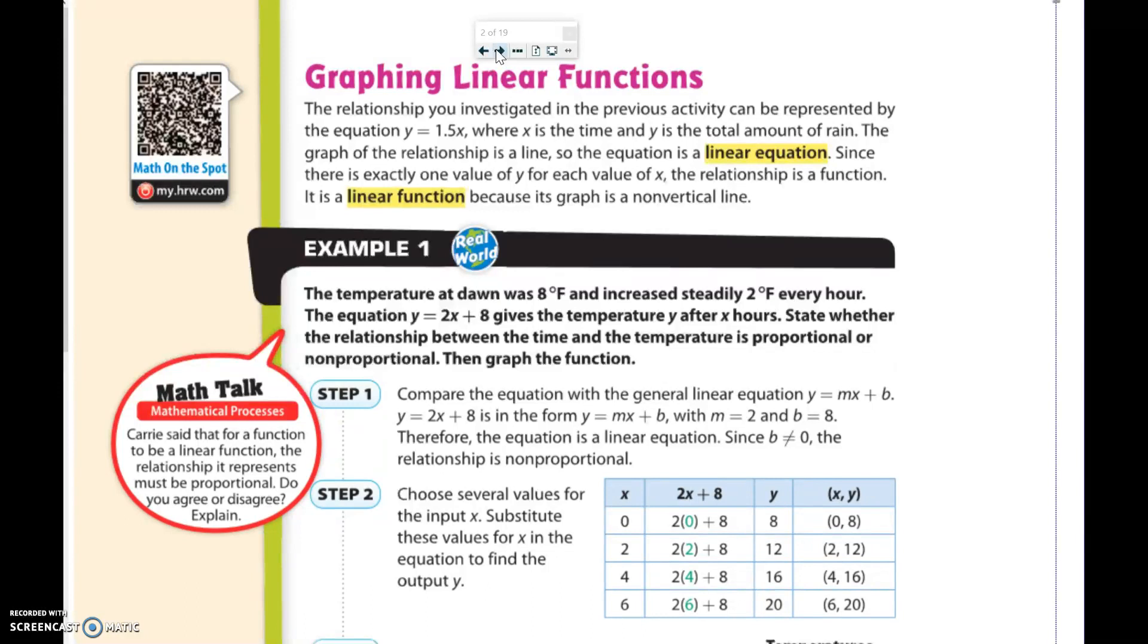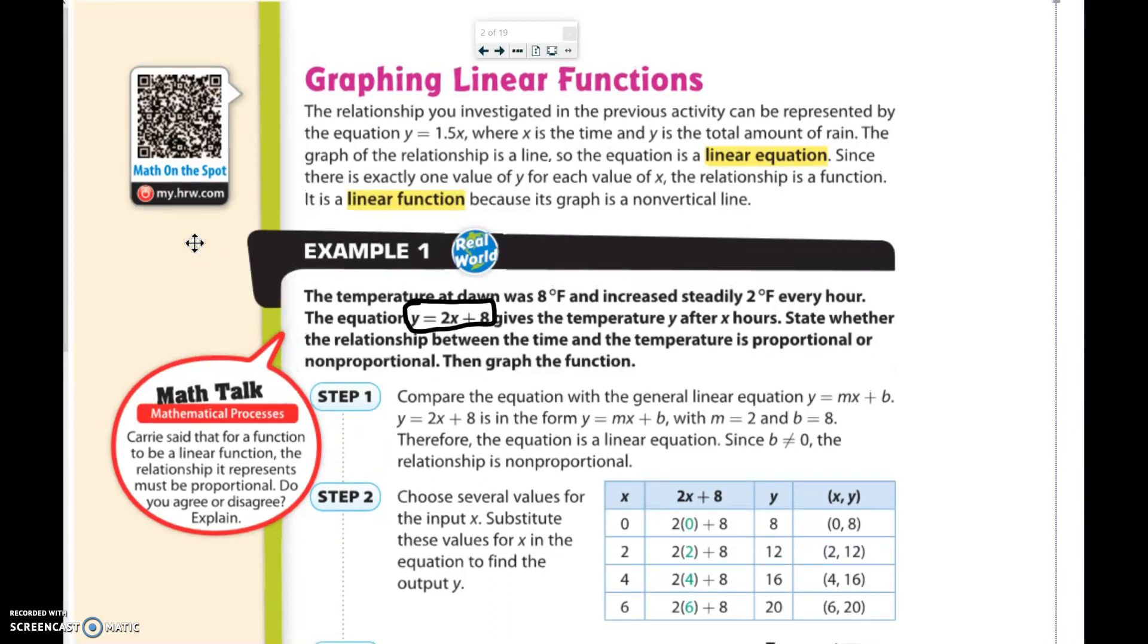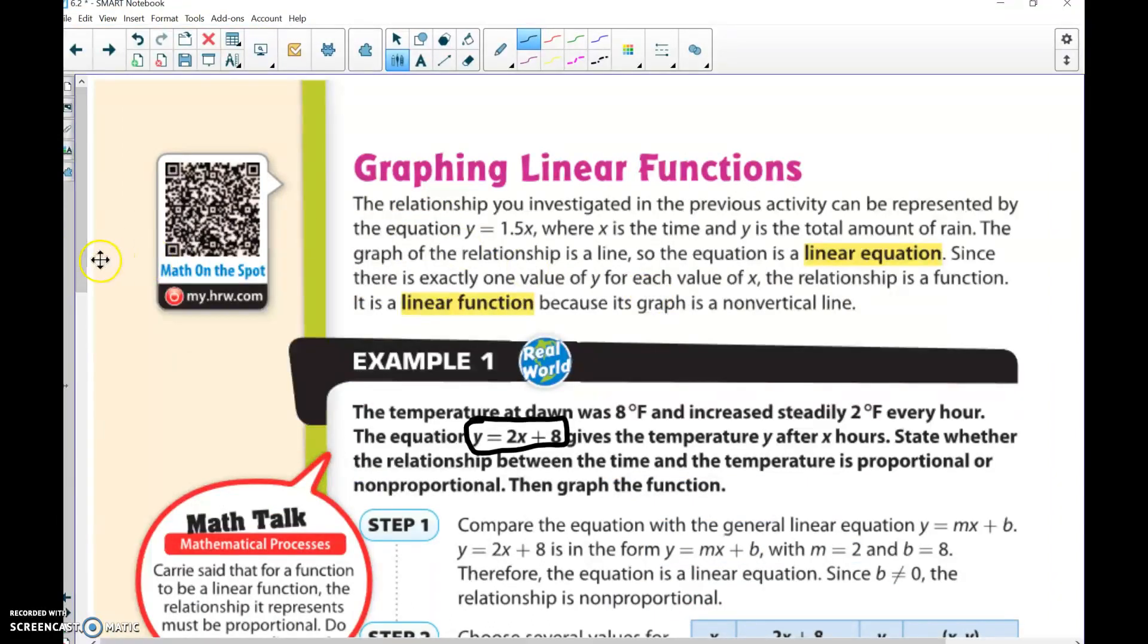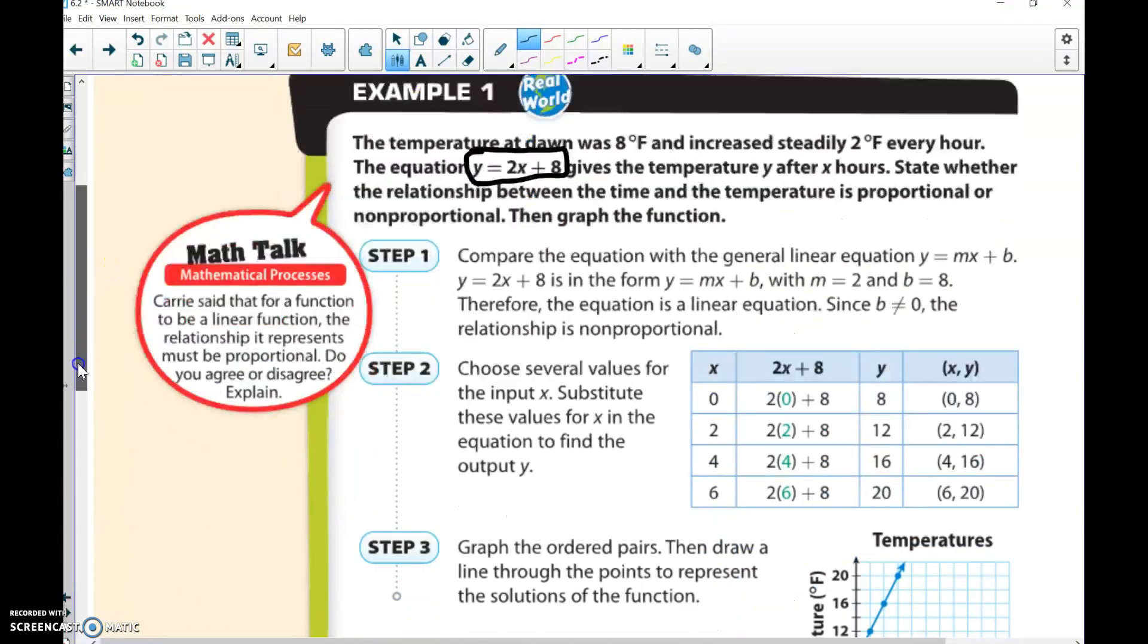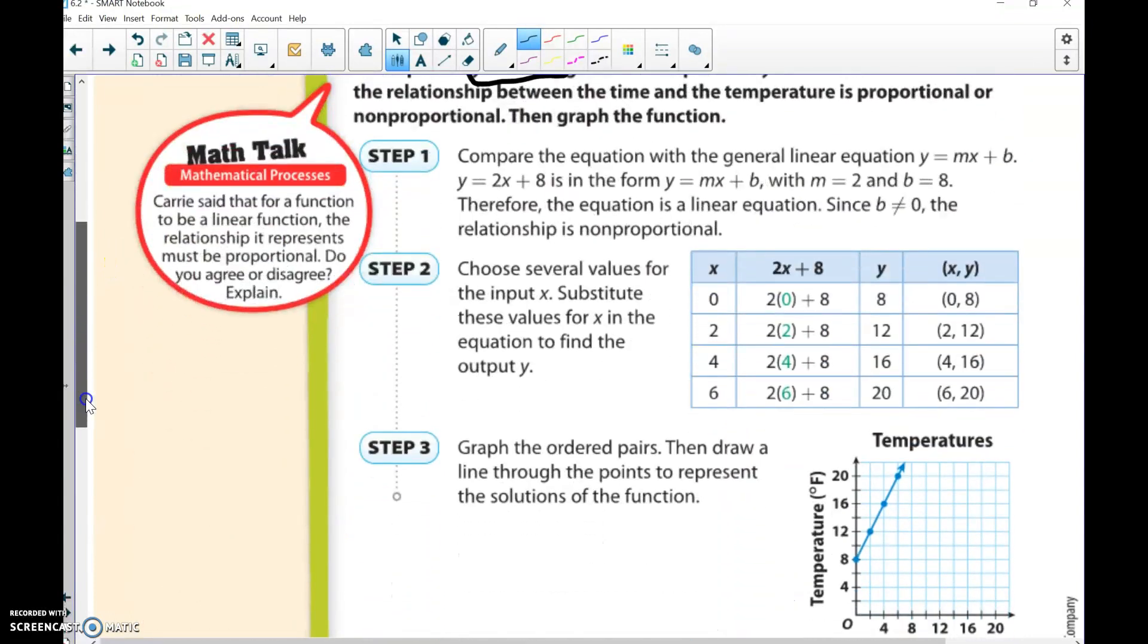Let's look at example 1. We can tell based on the equation here, we have y = 2x + 8. Remember, as long as we don't have that x squared in there, we should be able to get a linear function. If we look down at the rest of this problem, we can see that if we plug in 0, 2, 4, or 6...